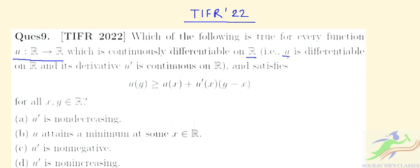That is, u is differentiable on ℝ and its derivative u' is also continuous on the real space, and it satisfies this relation: u(y) ≥ u(x) + u'(x)(y - x) for all x, y in the real space ℝ. So we have to find the correct option.